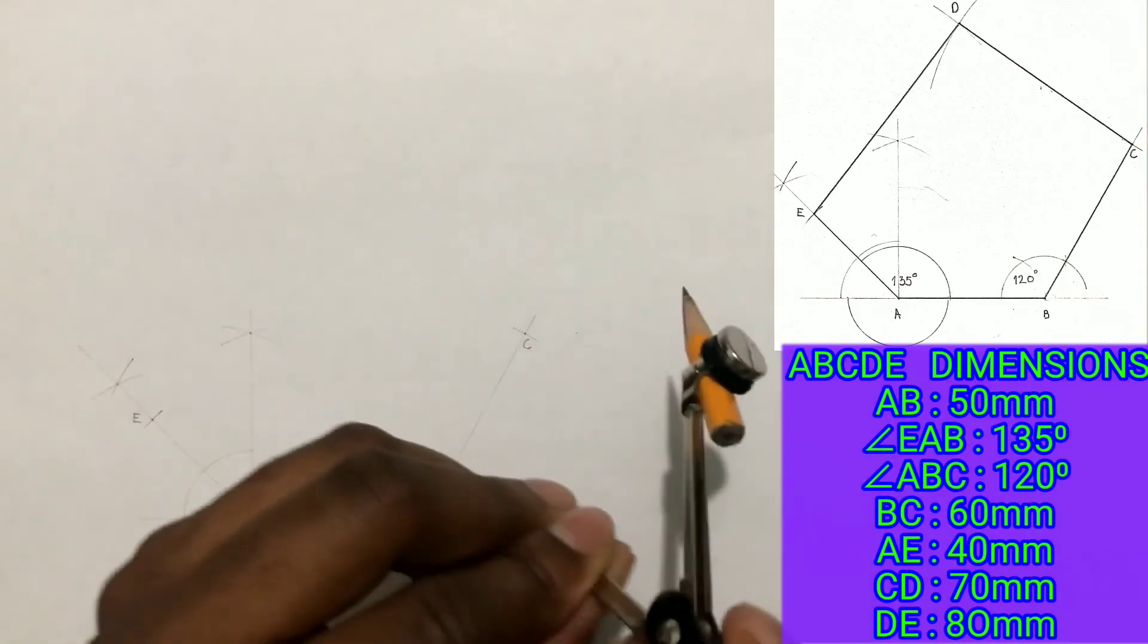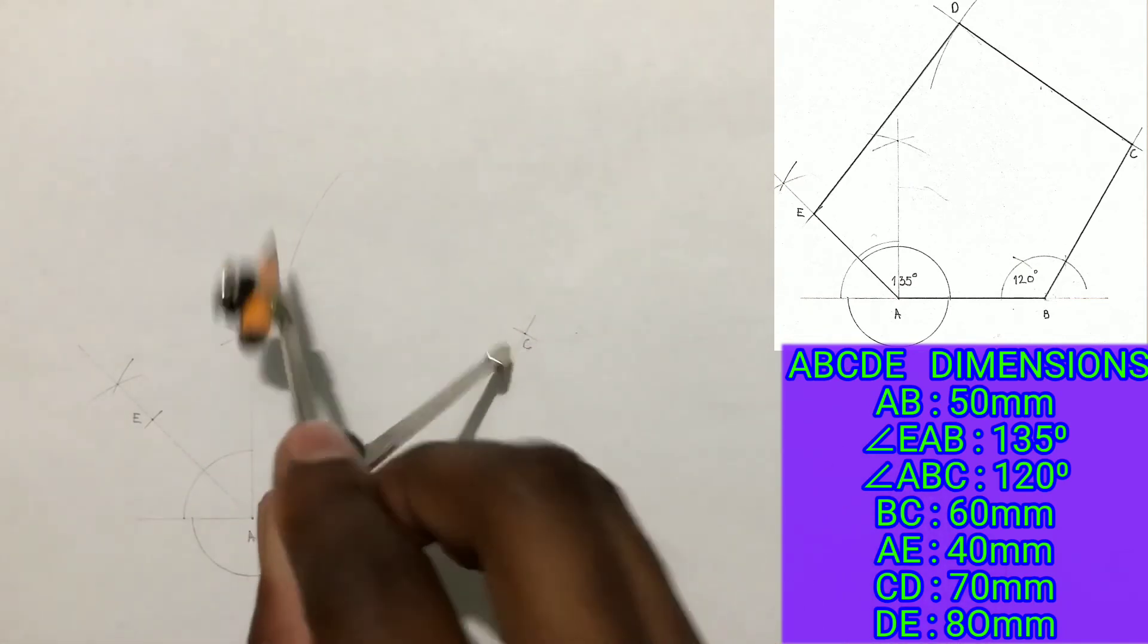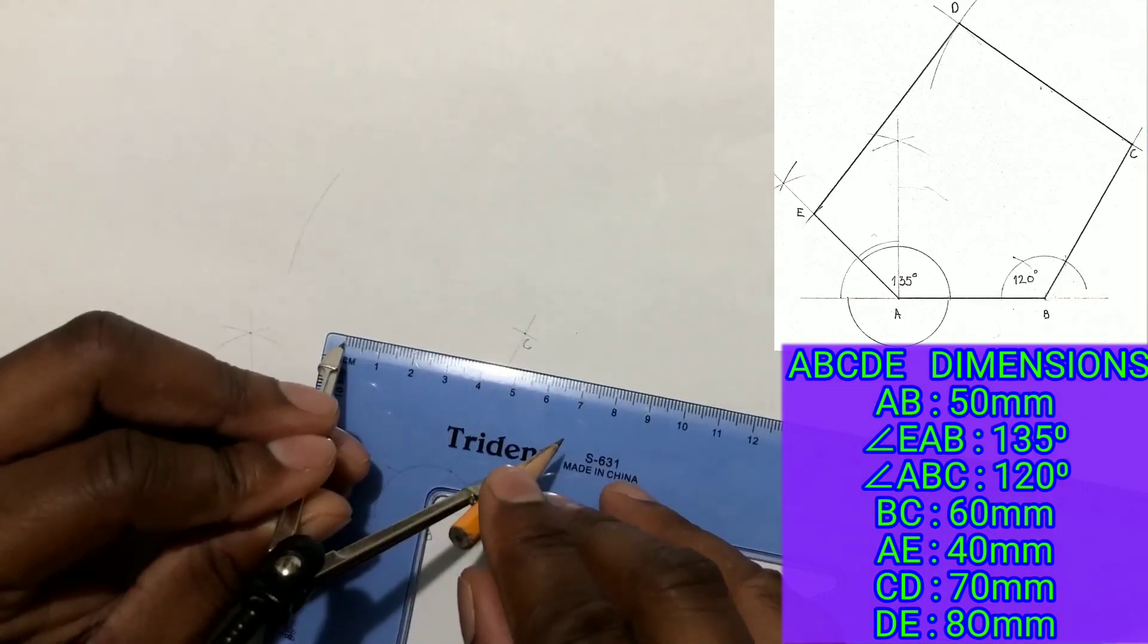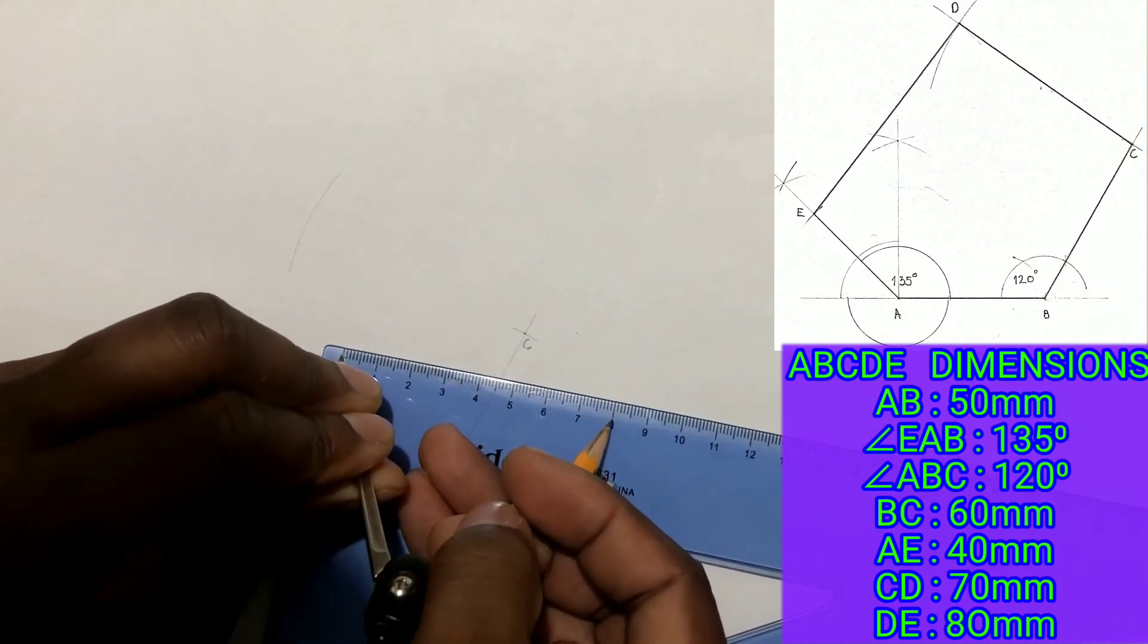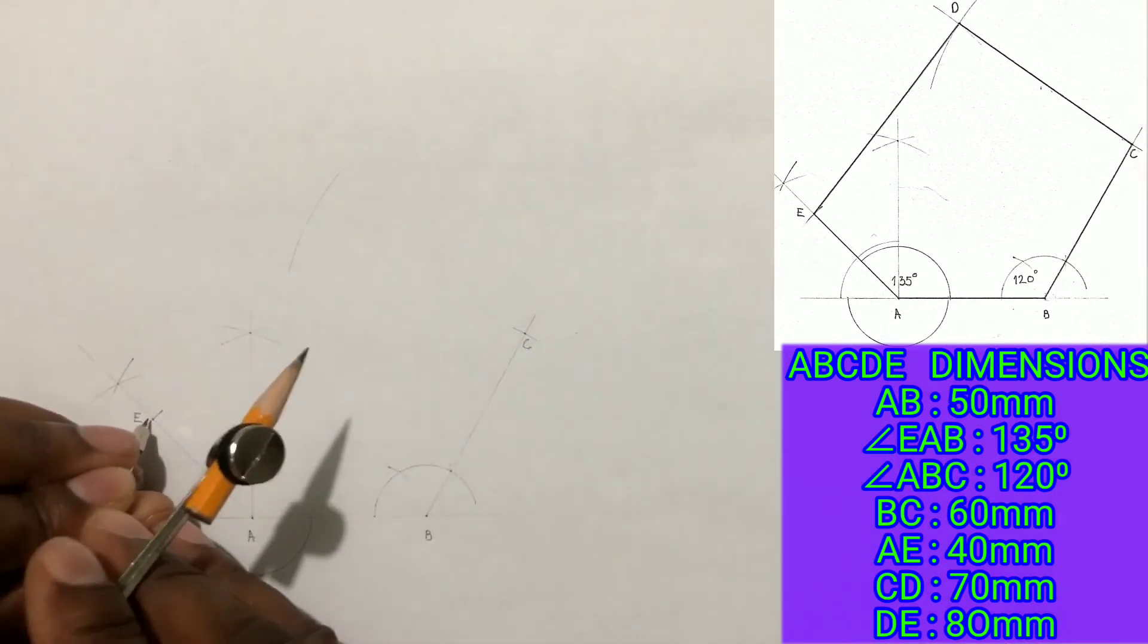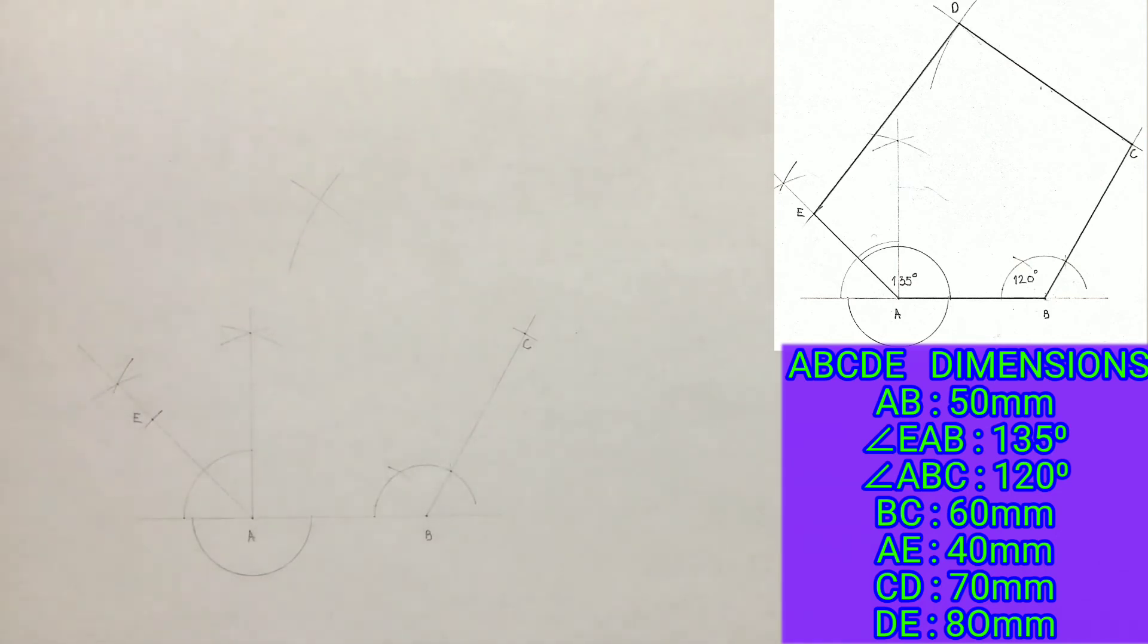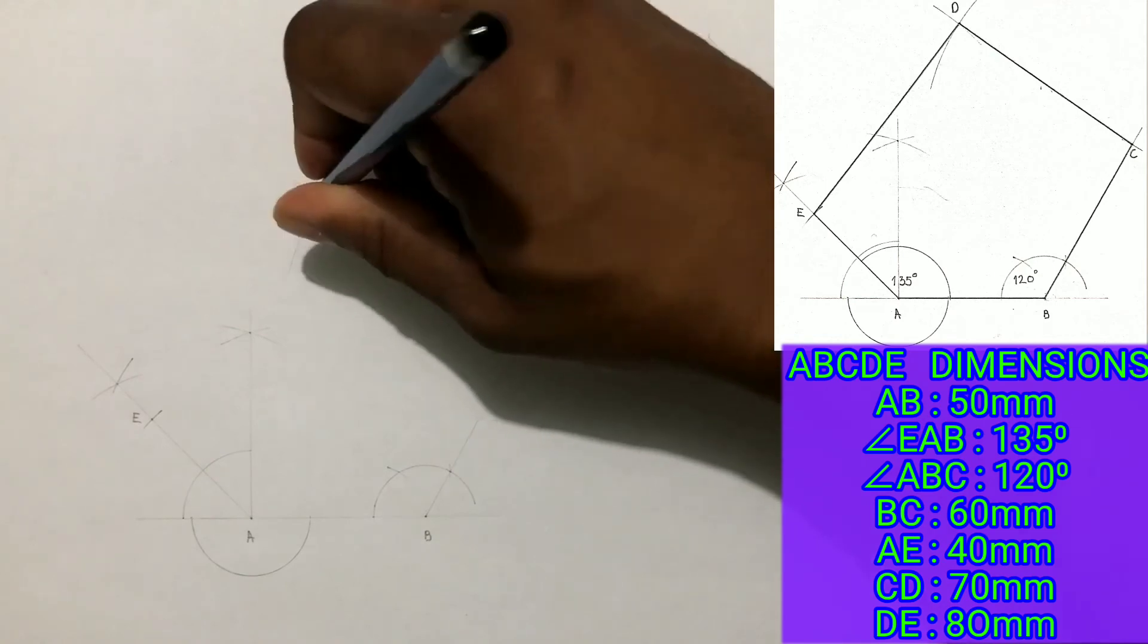And from point C, scribe an arc. This arc is one of two that will give us point D. Now open your compass to 80 millimeters. And from point E, scribe an arc to intersect the previous arc you drew. Identify and label this intersection as point D.